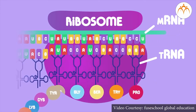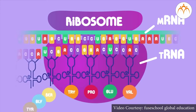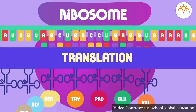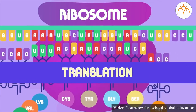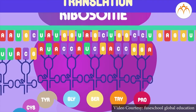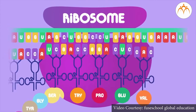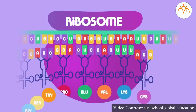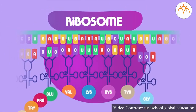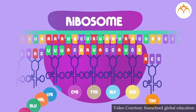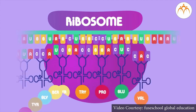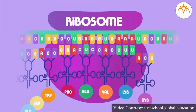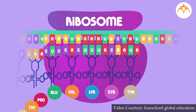This process is called translation. During this process, the ribosome keeps on moving from one end of mRNA to the other end by the distance of one triplet codon. This movement is called translocation.